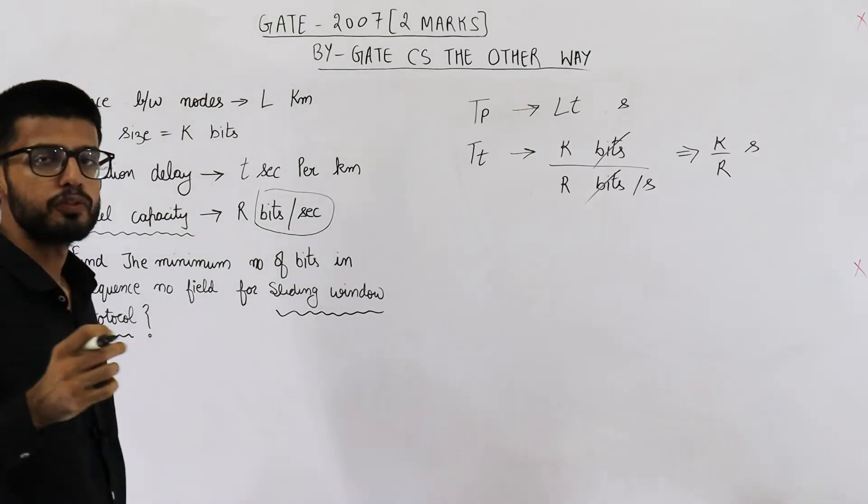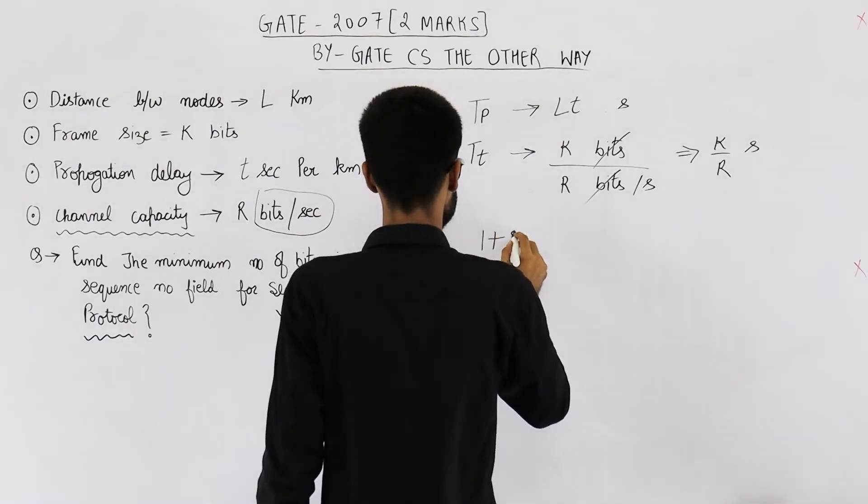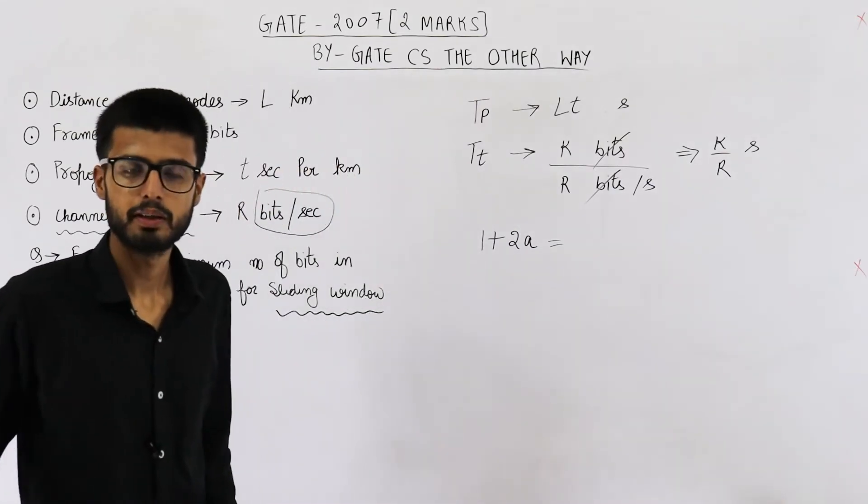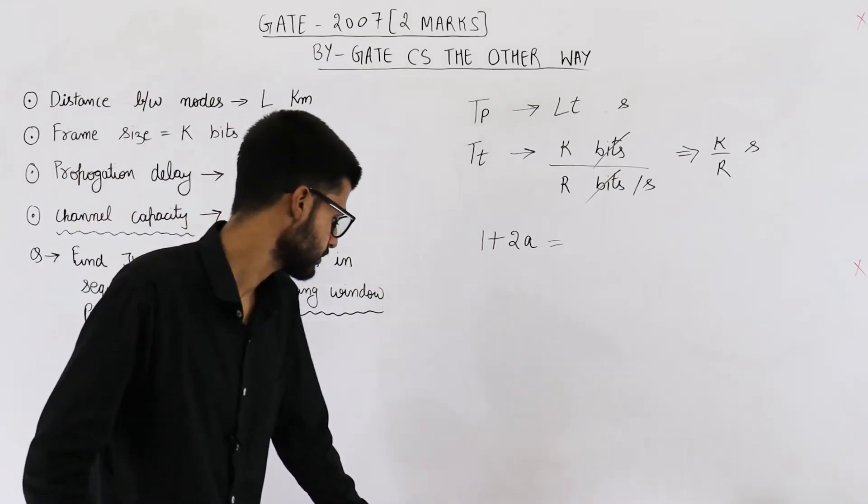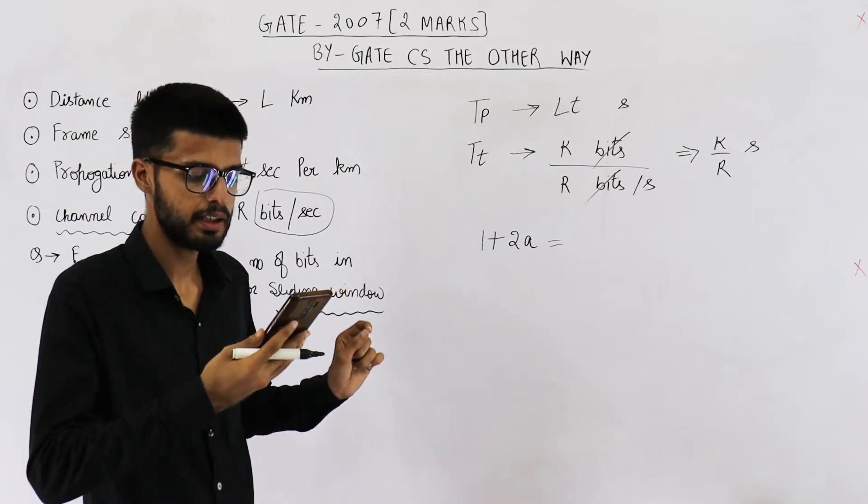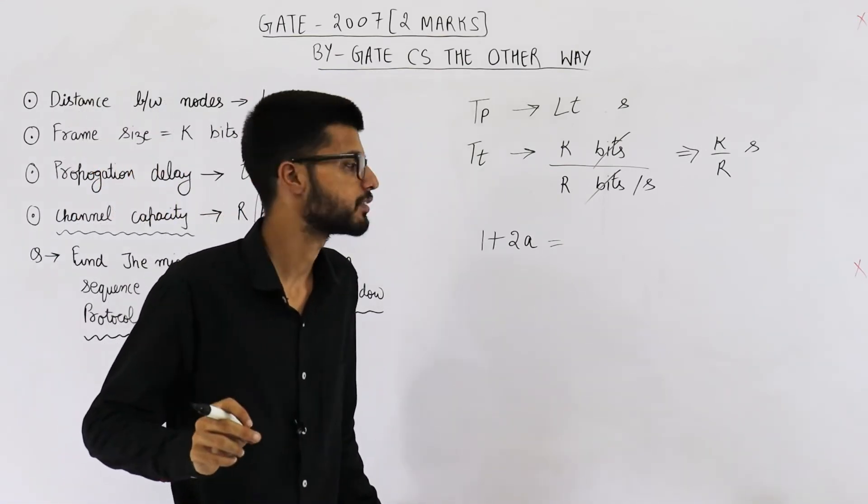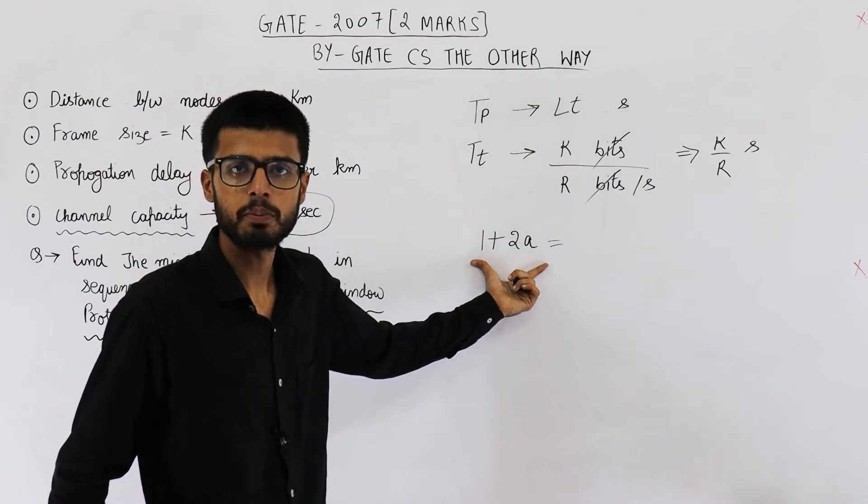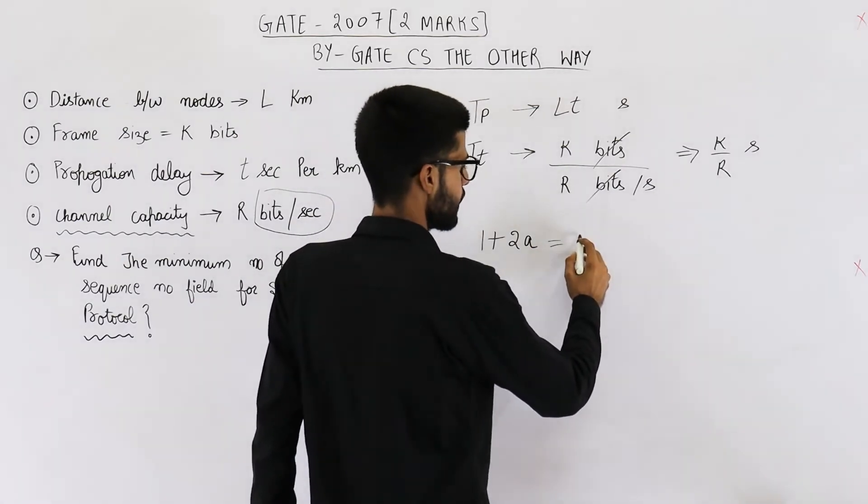Now you can see the sender window size. It will be 1 plus 2A. So why I am taking it 1 plus 2A only? Because in question, they are specifically mentioning that we want 100% utilization. They are saying the minimum number of bits for sequence number field in a frame for maximum utilization. Maximum utilization means 100% efficiency. So for 100% efficiency, the condition is that sender must send 1 plus 2A frames. So let us just determine the value of sender window size. That is 1 plus 2A.